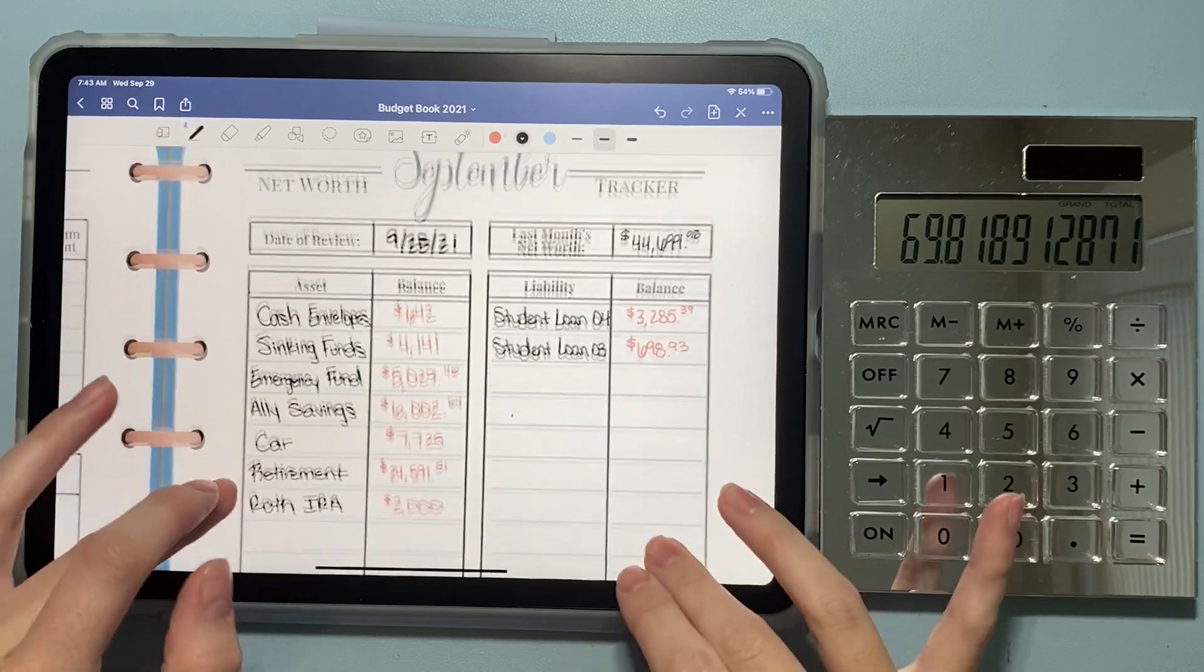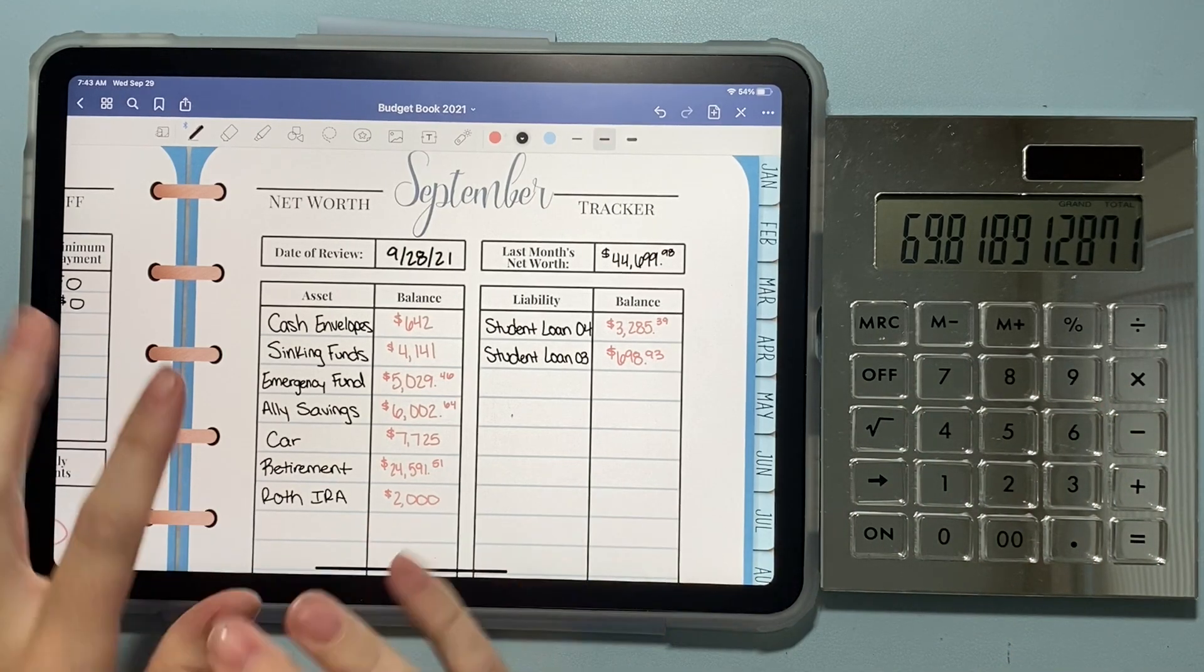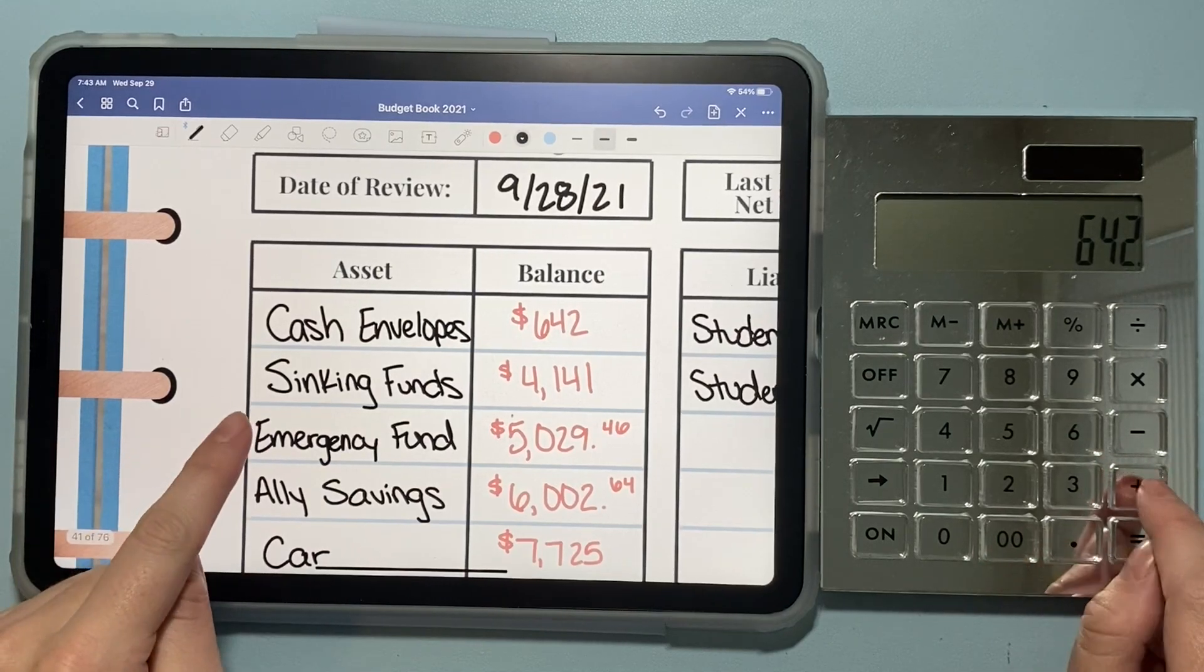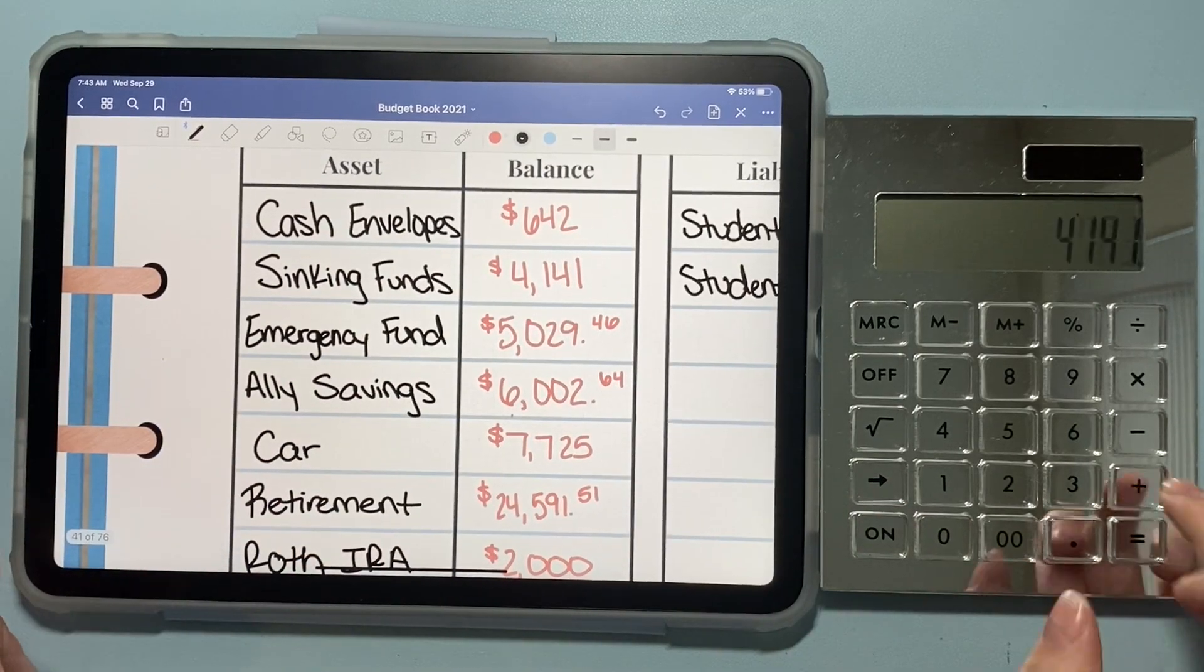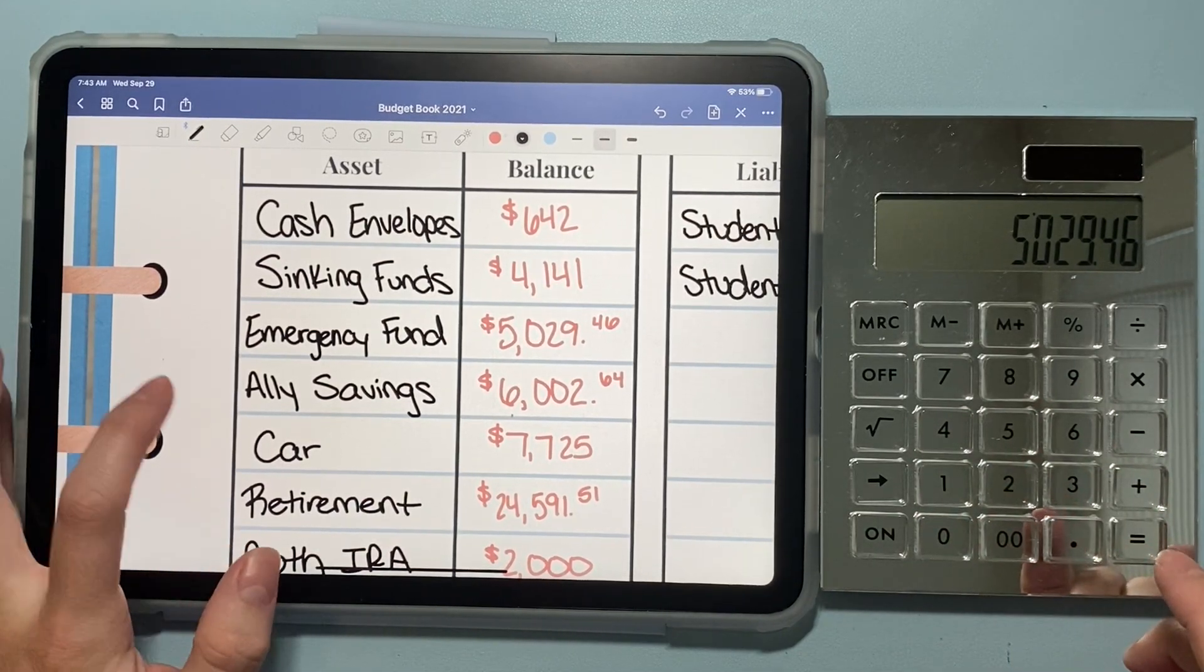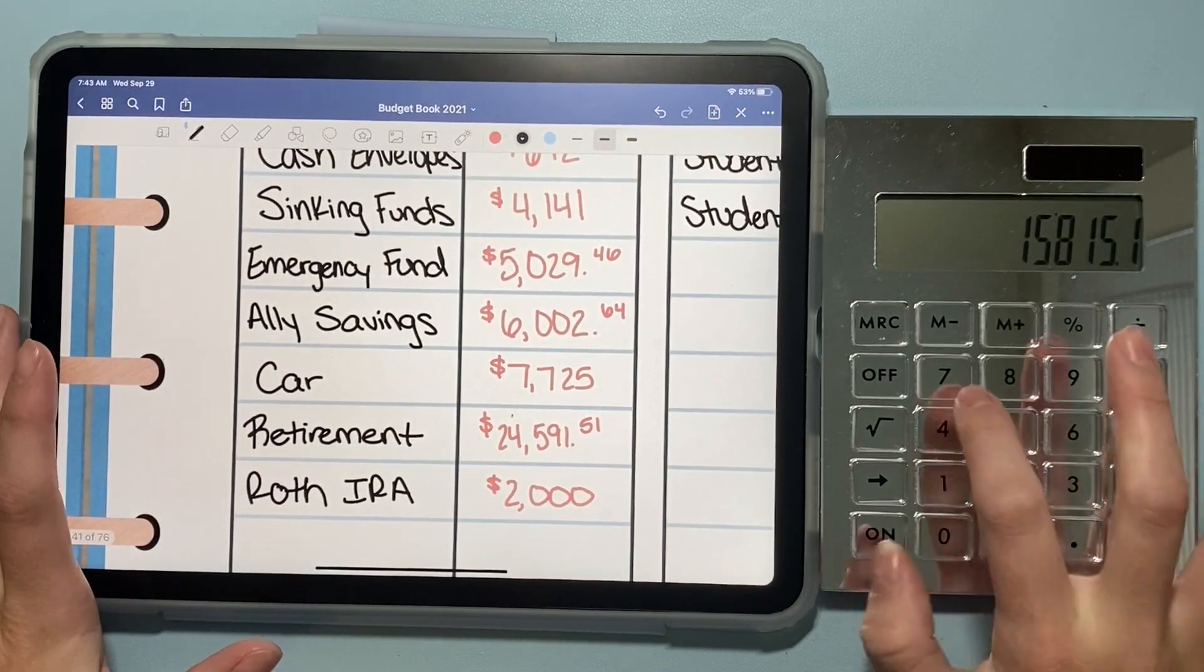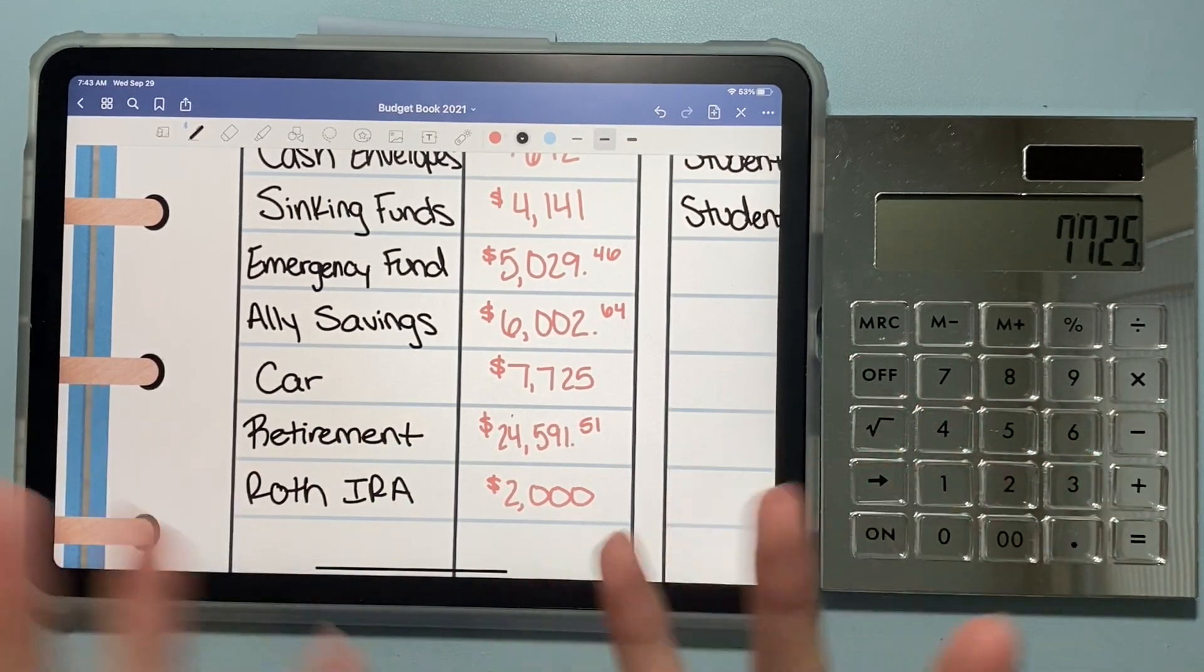And then my net worth is next. And I did go ahead and pre-populate some of this as well. In my last video, if you missed it, I'll link it up above. But we did count our cash envelopes and our sinking funds. So we had $642 in our cash envelopes, which is my first asset. My second asset is my sinking funds, which had $4,141. My emergency fund, which is in a savings account has $5,029.46. In my Ally savings account that I recently opened, which is high yield, we have $6,002.64. My car as of today was worth $7,725. I get that number from Credit Karma. So I'm not sure how accurate it is, but we'll go with it.